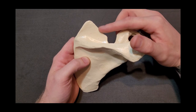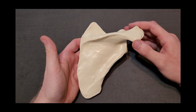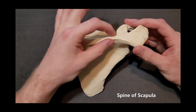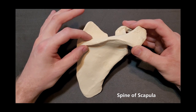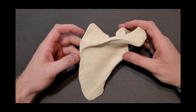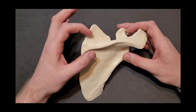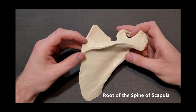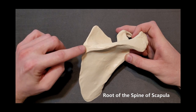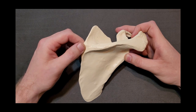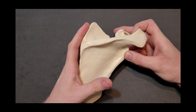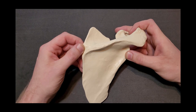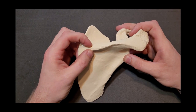Now looking at bony landmarks beyond borders, the spine of the scapula can be broken down into parts. Toward the medial side where the scapula starts to widen is the root of the spine of the scapula. The rhomboid minor attaches right at this root on the medial border. This slight thickening is also near the medial angle.